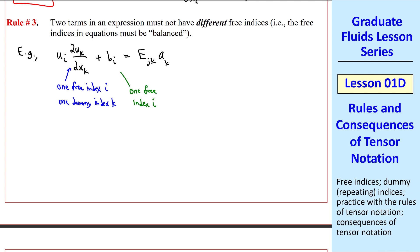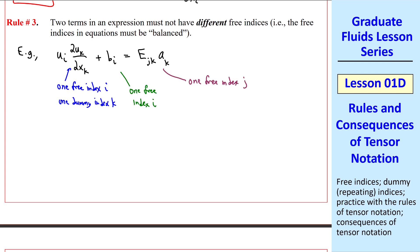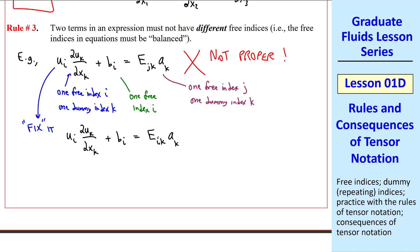But the last term has one free index, j, and one dummy index, k. By our rules, this equation is not balanced. This is not a proper expression in tensor notation. We can fix it simply by changing this j to an i. This equation is proper, since i is the free index in each term, and we say that it's balanced.